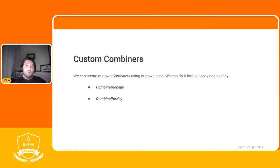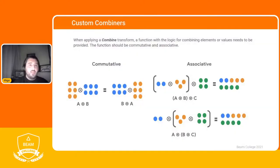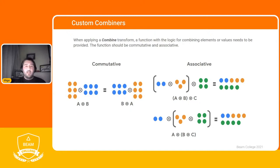We can create our own combiners when the built-in ones don't fit our use case — globally with CombineGlobally, or per key with CombinePerKey. When using custom combiners, we need to ensure our logic is commutative: combining element A then B must give the same result as B then A. The same applies to the associative rule: combining A with B, then with C, must equal combining A with the result of B combined with C.